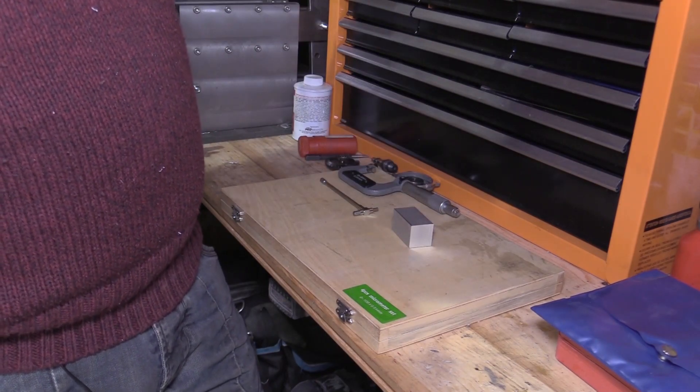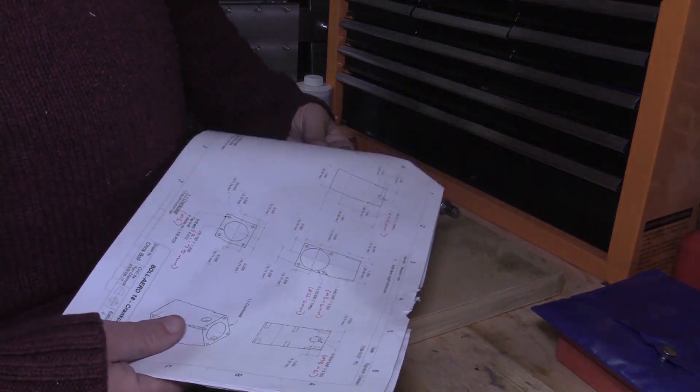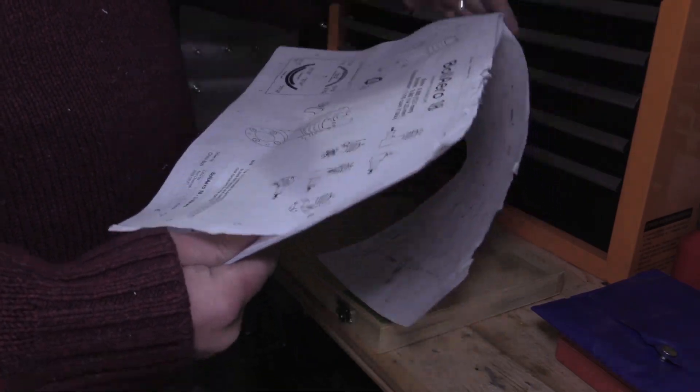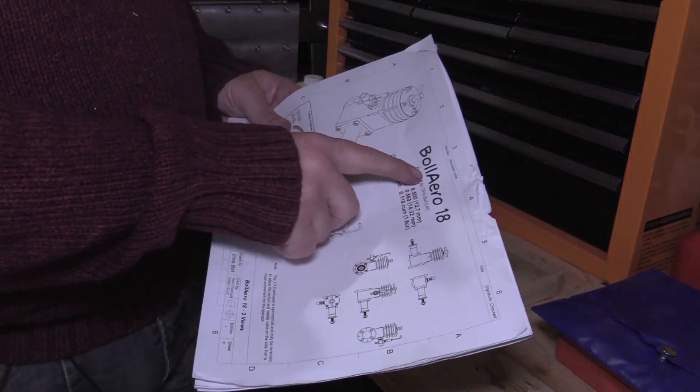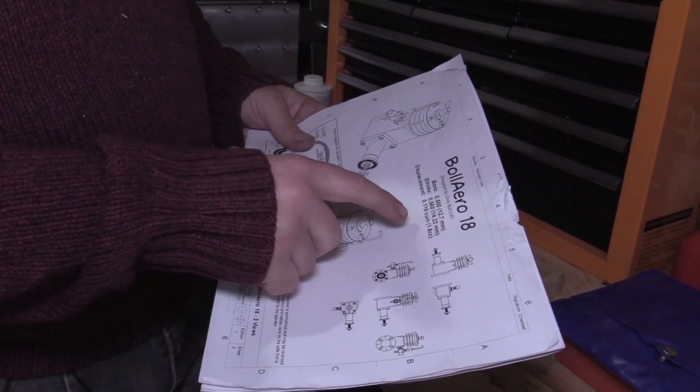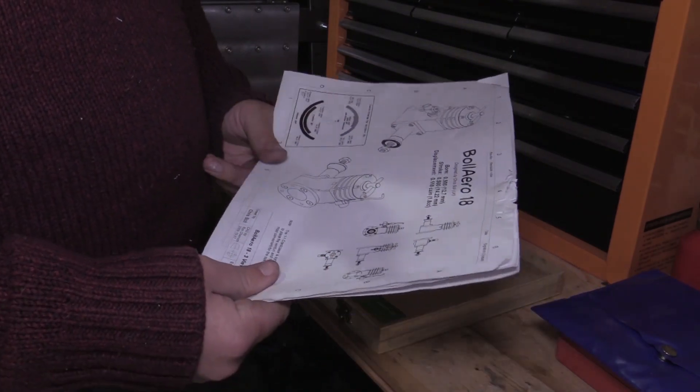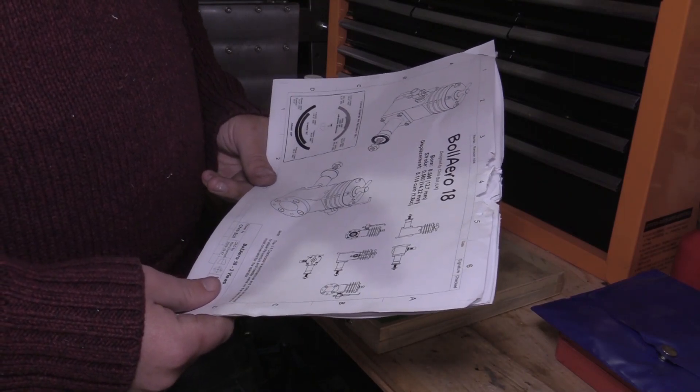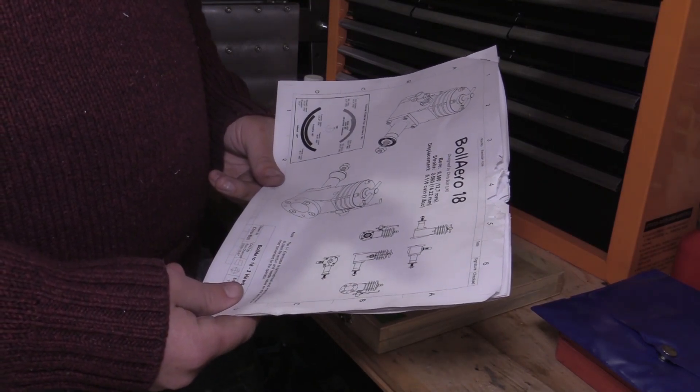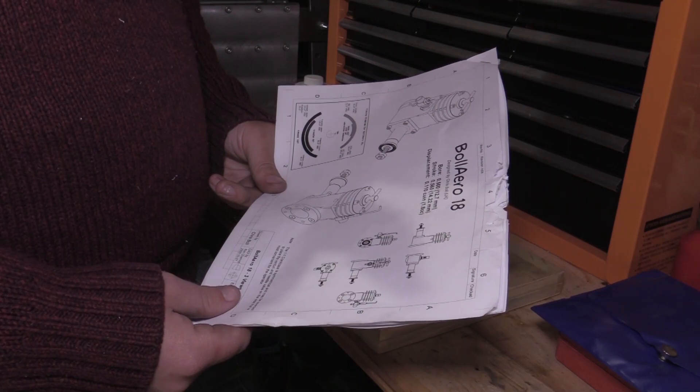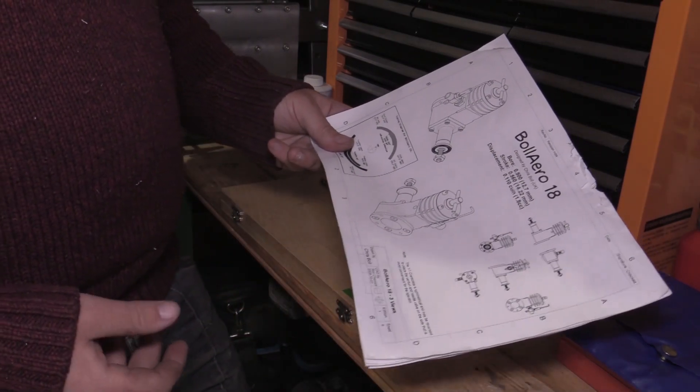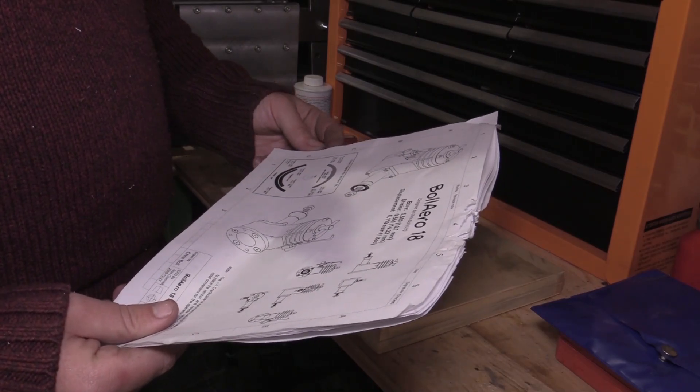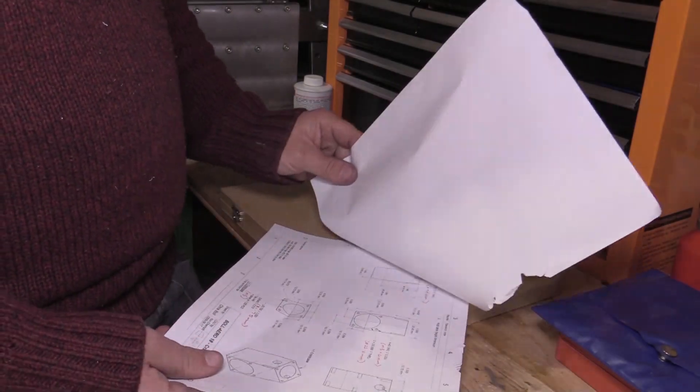So what I've done is I've downloaded some drawings for the Bull Aero 18, and that's just a small 1.8cc engine. It's not very big, it's got a half inch bore and just over a half inch stroke, and you can get these drawings freely available online so I decided to go with this one.